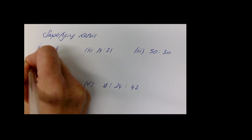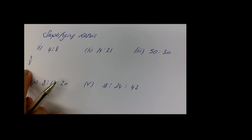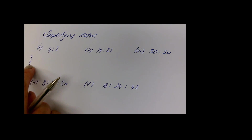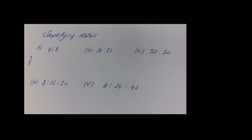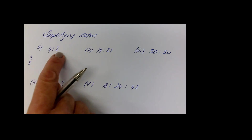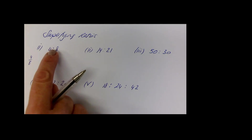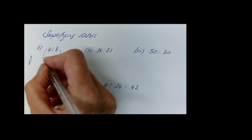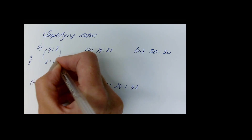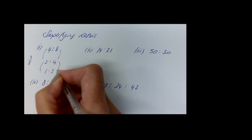Just like with simplifying a fraction — if you had 4 over 8 and want to simplify it — you have to think of something that goes into both the top and bottom, dividing both by the same thing to get an equivalent fraction. The same applies to ratios: do the same thing to each side of the ratio notation. So if we divide 4:8 by 2 we get 2:4, and divide by 2 again to get 1:2.